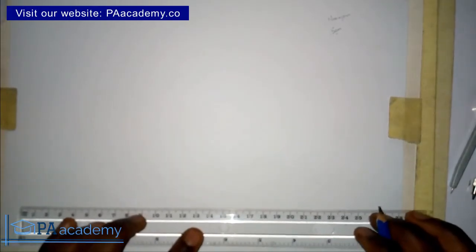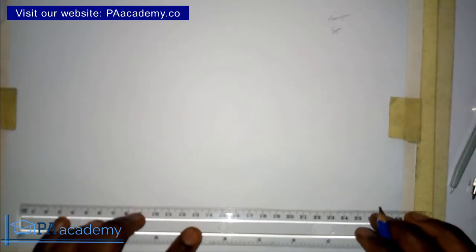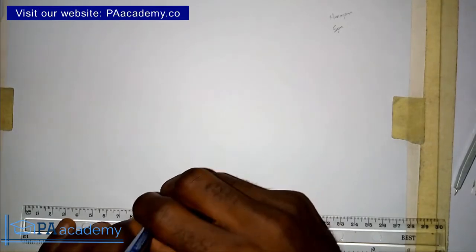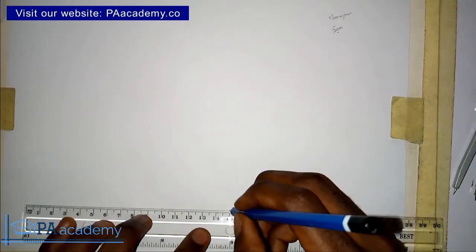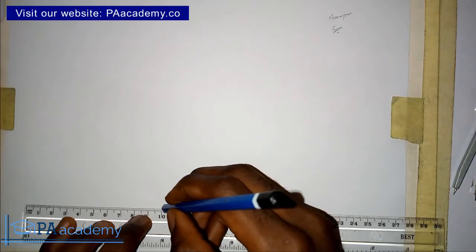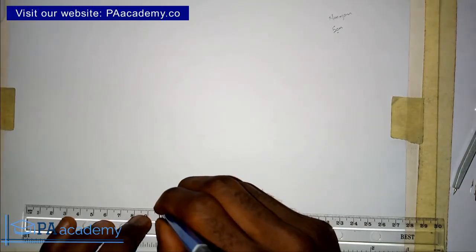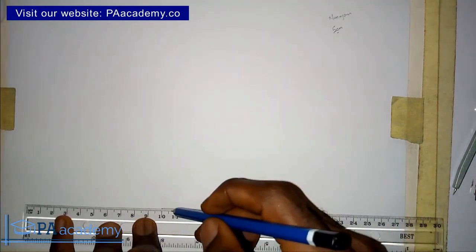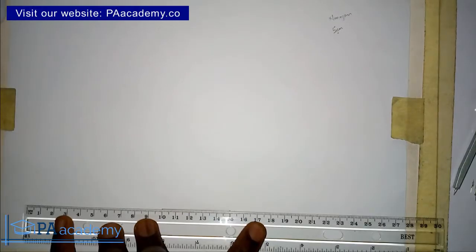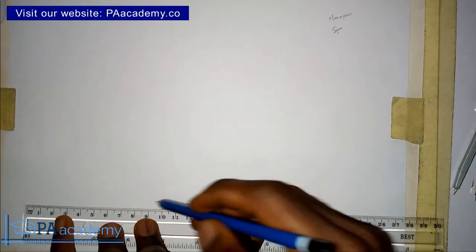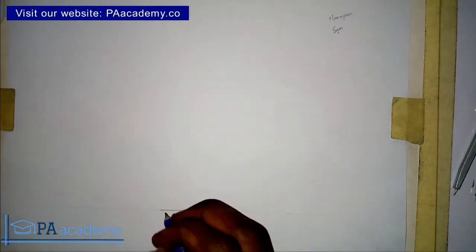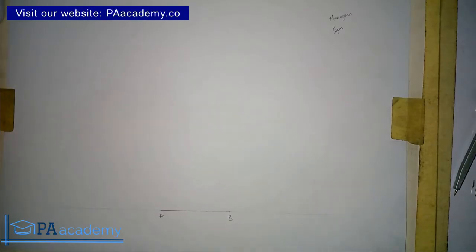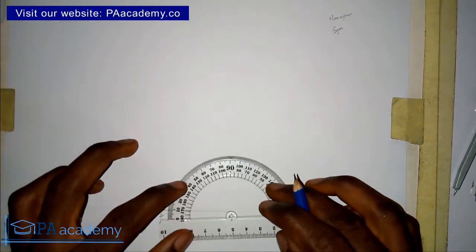So let's get into this video. The first thing I'm going to do is draw one side of the nonagon. Since we are working with five centimeters, I'll measure five centimeters. I'll also be using a protractor to get this done — there are different methods but I'll be using the protractor. I haven't drawn the line yet; I'm also going to extend it a bit both left and right. So here we have our first side, which is AB.